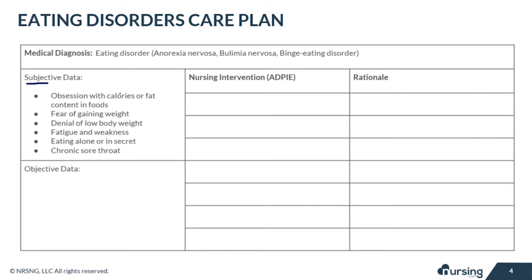Looking at the care plan for eating disorders, starting with subjective data: the patient with anorexia nervosa may have an obsession with calories or fat content on foods — they might obsess over the calorie count on the back of a box. This is because of their disturbed body image and their fear of gaining weight.